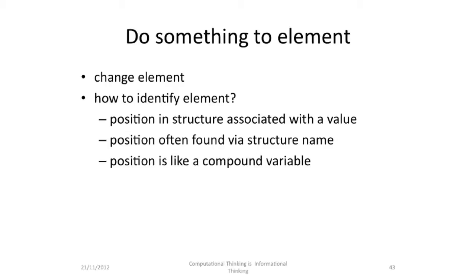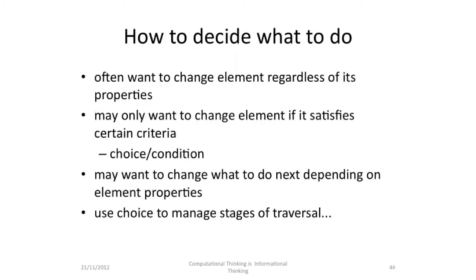As we go to each element during the traversal, we typically want to do something to the element to change it. So we need to know how we identify the element — we need to know the position in the structure associated with the value, so we need to somehow get into the structure. Typically we do this via the name of the structure, and we have a position within the structure, so the position is a bit like a compound variable — maybe it's an array and an index, maybe it's a record and a field or an object and an element. We have to decide what to do with the element. Maybe we want to change the element regardless of its properties, but we often only want to change an element if it satisfies certain criteria. So here we introduce the idea of choice and condition. Maybe what we want to change will depend on the element properties. Maybe what we want to do next will depend on the element properties. Maybe we have to use choice to manage the stages of our traversal.